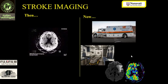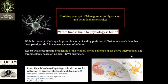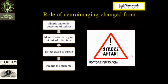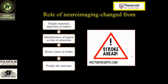We are moving toward stroke units which carry CT scanners to save time — from 'time is brain' to 'physiology is brain.' A lot of papers are coming up, and even the window period, which was earlier 3 hours then 4.5 hours, is expanding to up to 6 hours. The role of a neuroimaging specialist is: first, identify and locate the infarct; then identify the area at risk — whether there is salvageable penumbra; then detect the cause; and then predict the outcome.